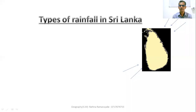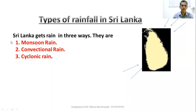Sri Lanka gets rainfall by three ways. Sri Lanka is located in the tropical zone, close to the equator. Sri Lanka gets rain in three ways: monsoon rain, convectional rain, and cyclonic rain or cyclones. These are the three ways.